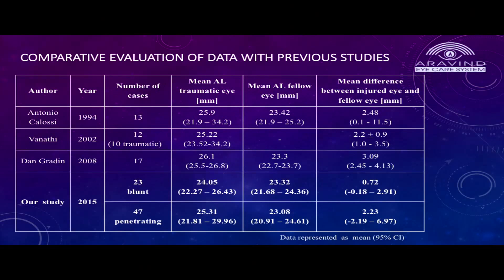Comparing our data with various studies: most prior studies on traumatic cataract have not directly studied axial length, but rather IOL power miscalculation. All authors found that axial length elongation was more in traumatic eyes compared to normal eyes. In our study, we had 70 cases, whereas most other studies had no more than 20 cases. Consistent with other studies, elongation was more in penetrating compared to blunt trauma.